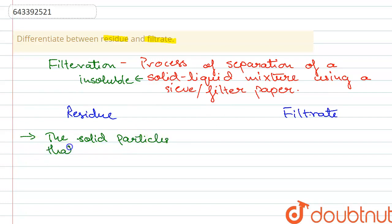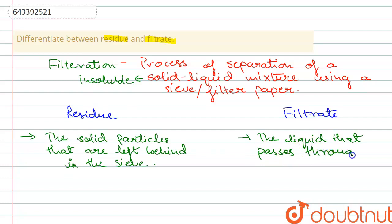And the filtrate is the liquid that passes through the sieve. So this is the difference between a residue and a filtrate. So that was the explanation for the question, thank you.